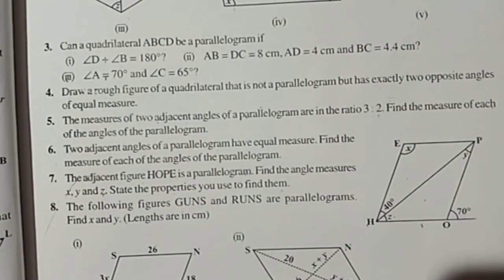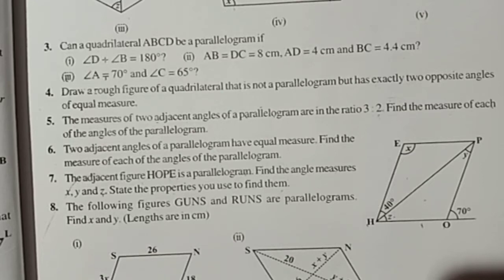By the property that adjacent angles are supplementary, then yes, it could be a parallelogram. But the quadrilateral may be a parallelogram but not always. Why? If both angles are equal to 90 degrees, then they add to 180 degrees and they should be equal.